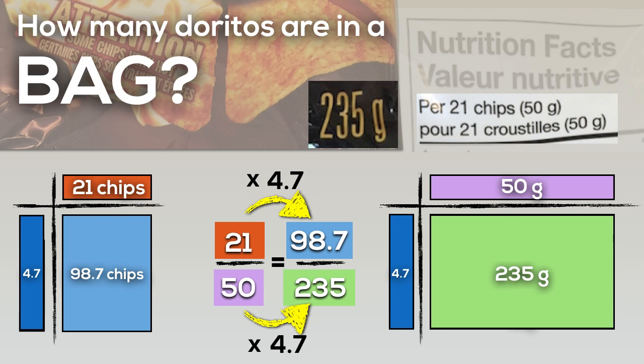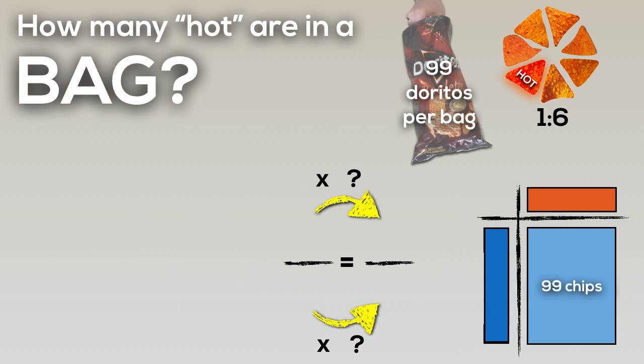Now we must keep in mind that 98.7 is how many Doritos in total there are in the bag. So now what we're going to have to do is look a little deeper here and now determine how many hot Doritos are in the bag, keeping in mind our one to six ratio: one hot chip for every six not hot chips.